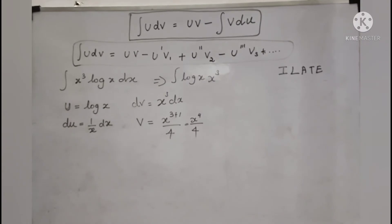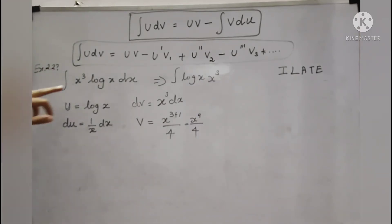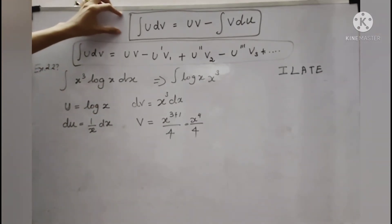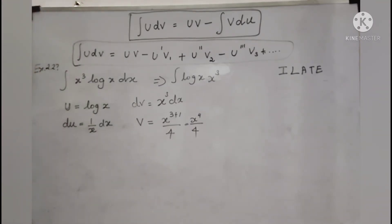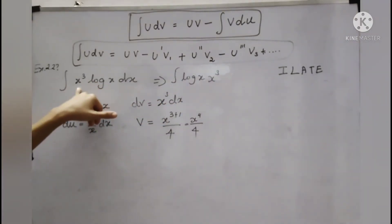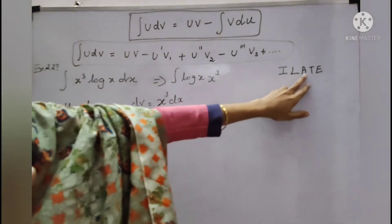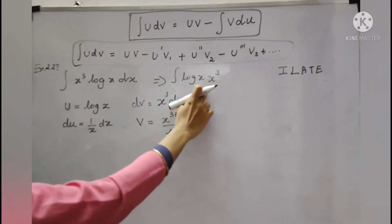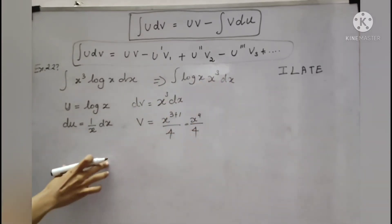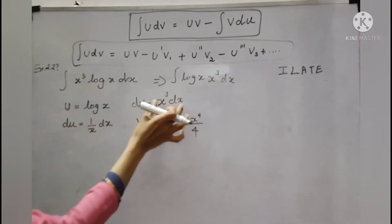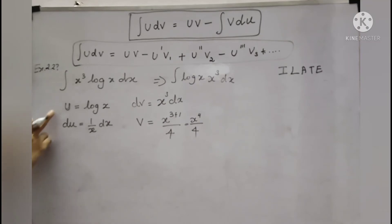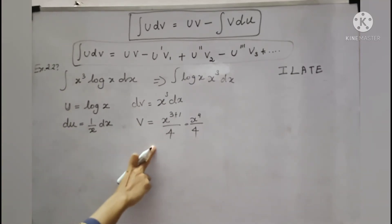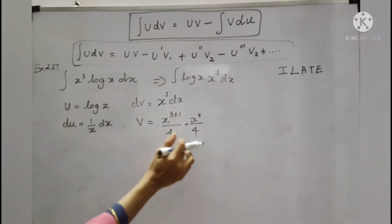Now example 2.27: integral of x³·log x dx. Normally we apply the uv method and this formula. Now we identify which is first using ILATE. This is algebraic and this is logarithm. But logarithm comes before algebraic in ILATE, so we interchange — logarithm is first and algebraic function is second. So u is log x and dv is x³ dx. We differentiate u: that is 1/x dx. And we integrate dv: x³ integrates to x to the power of 4 by 4.